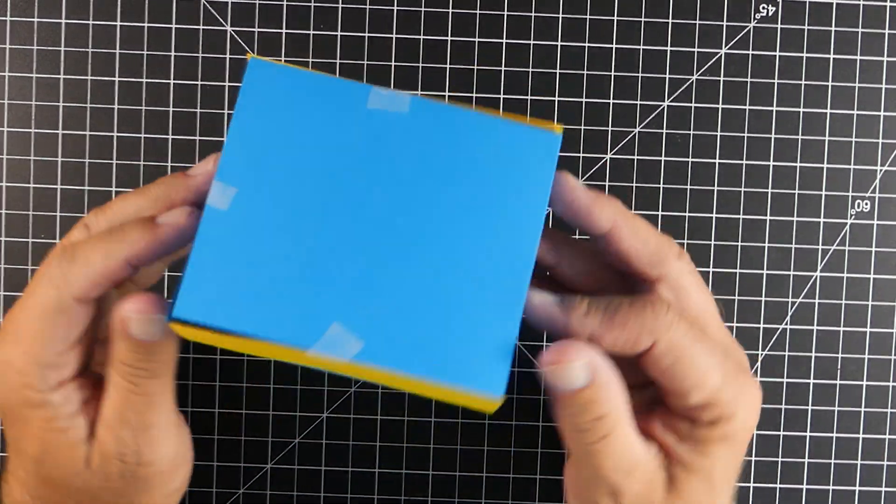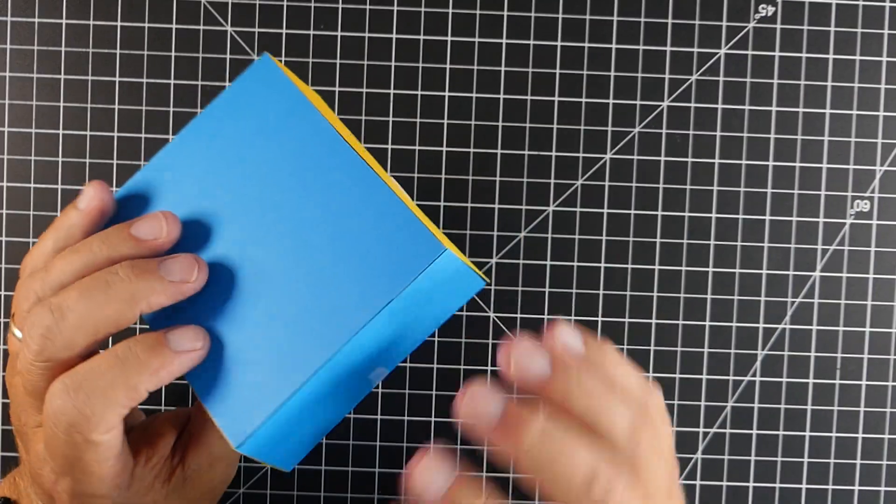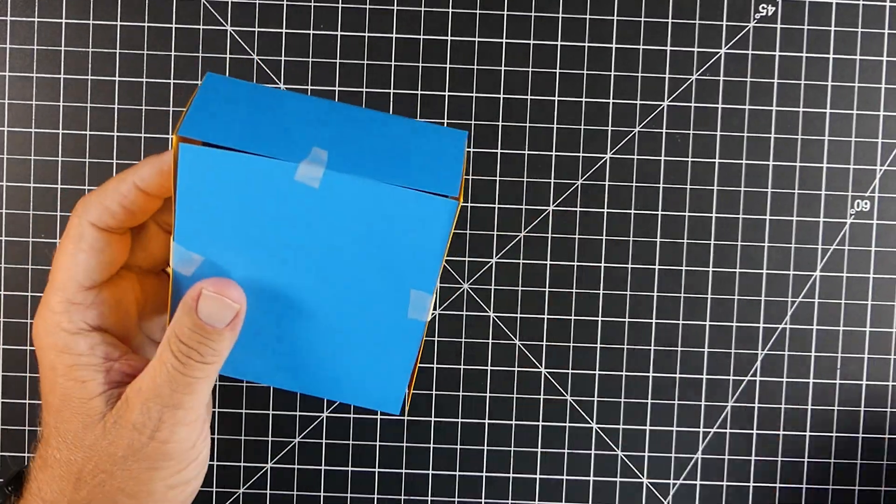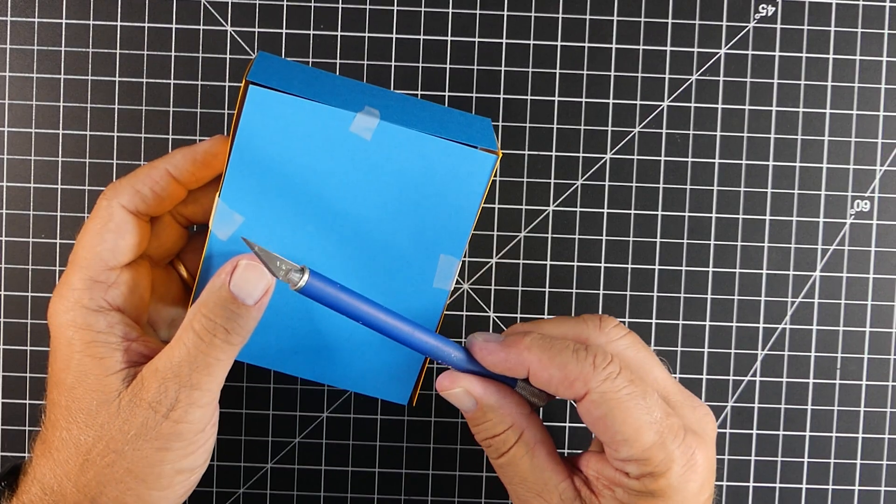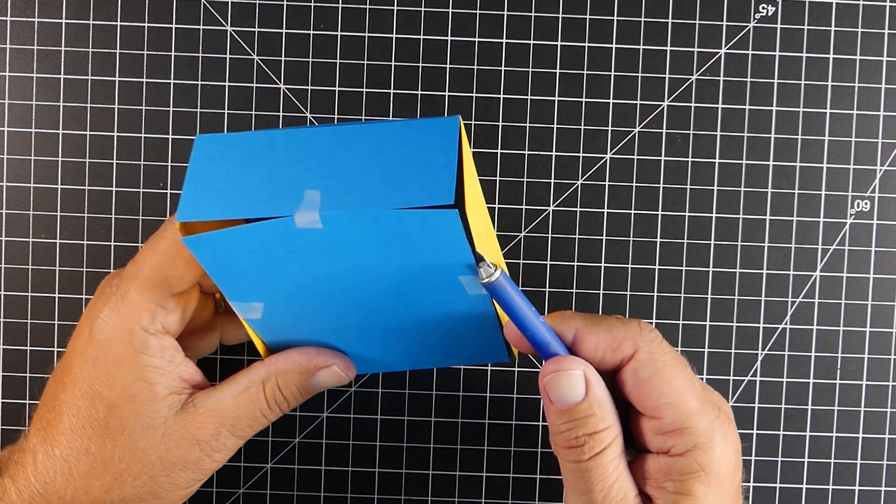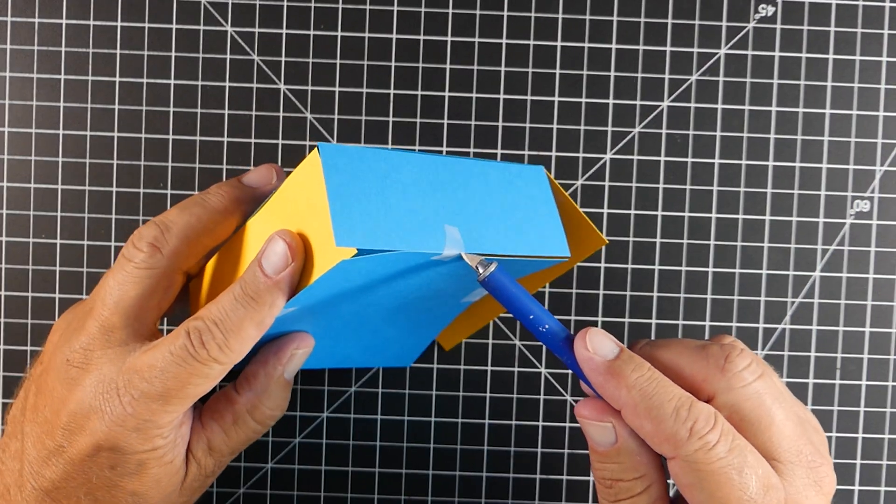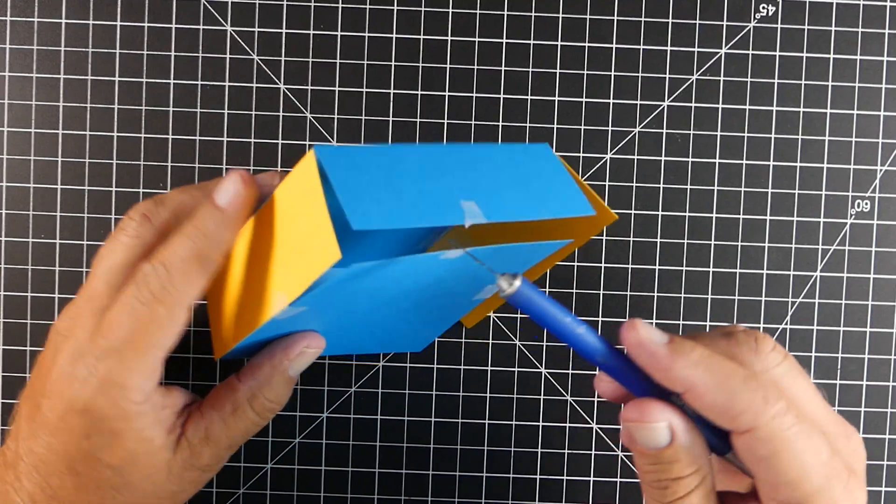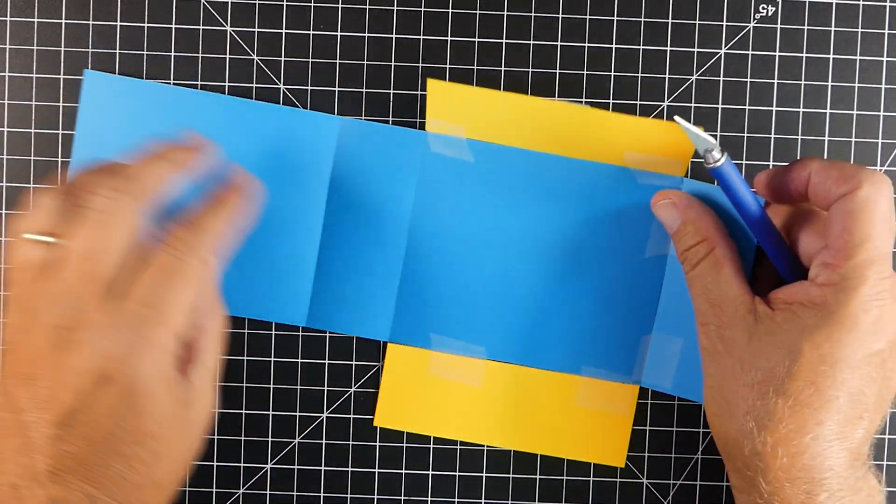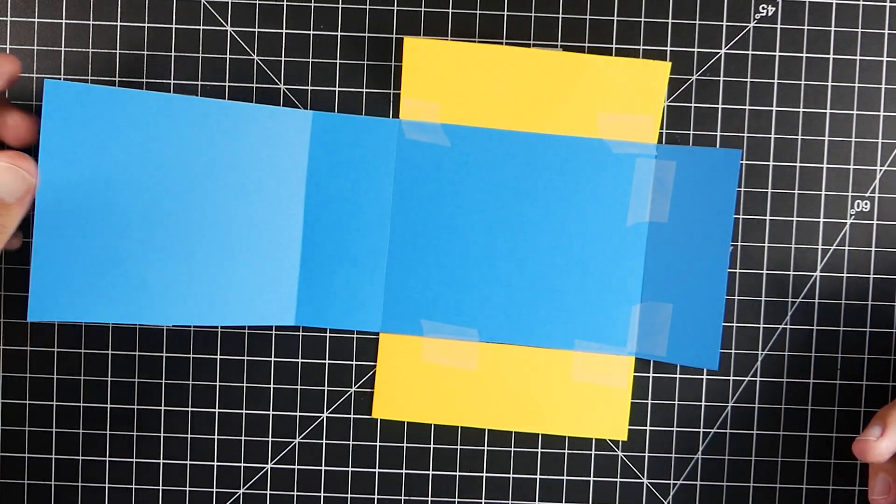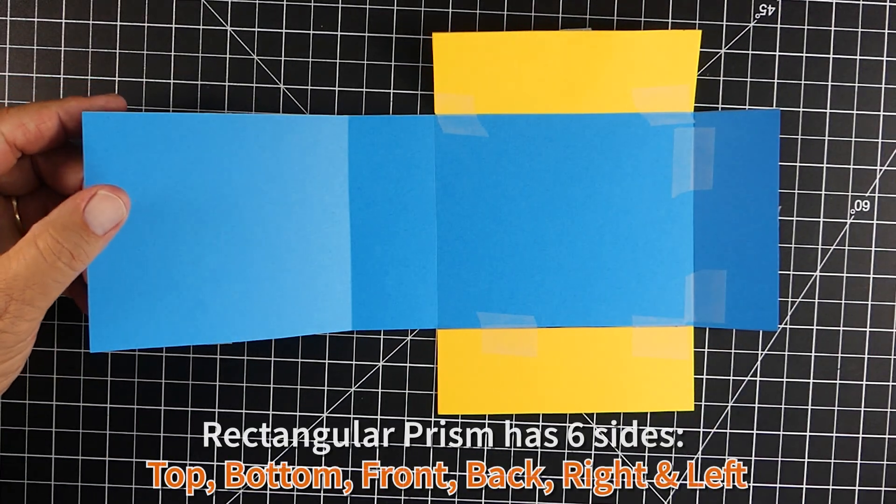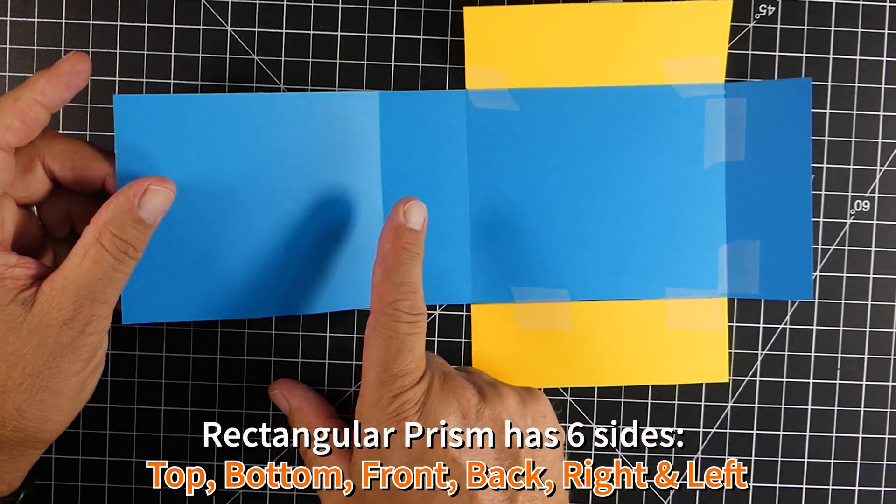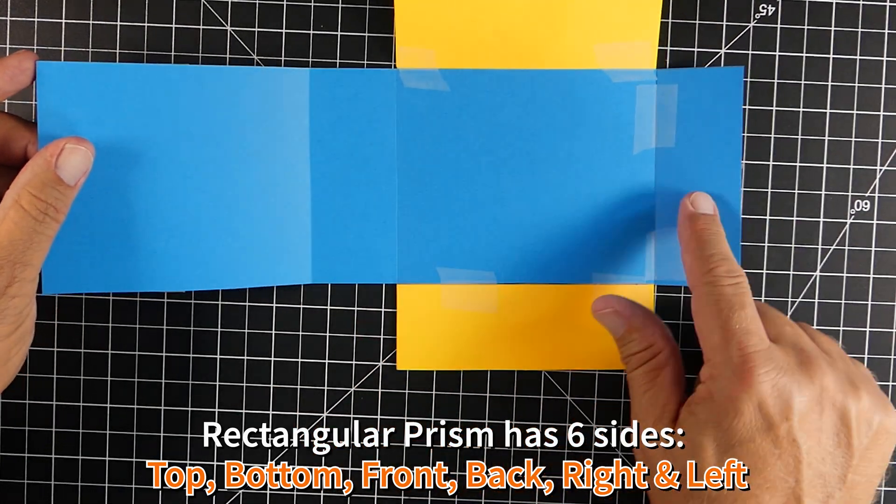So when we look at this, the yellow sides here, these are considered our bases. They're parallel with each other and you can see that they're the exact same. So what we're going to do with this three-dimensional object is we're going to cut along the edges. And when we do that, it's going to give us a two-dimensional shape. This shape right here is our net. Now when you look at this net, you can see that there are actually six different sides.